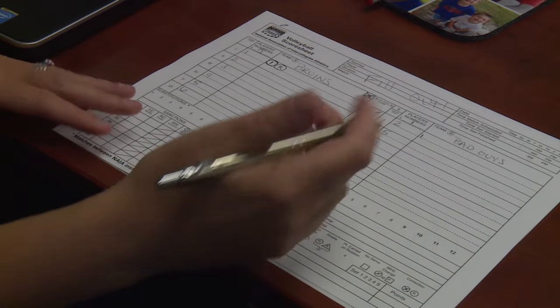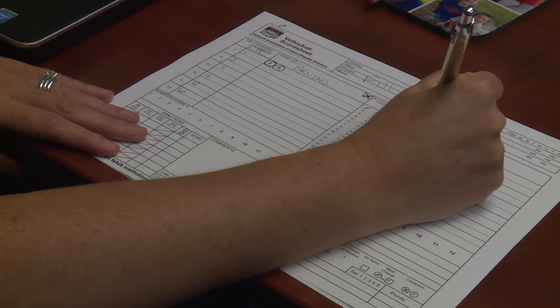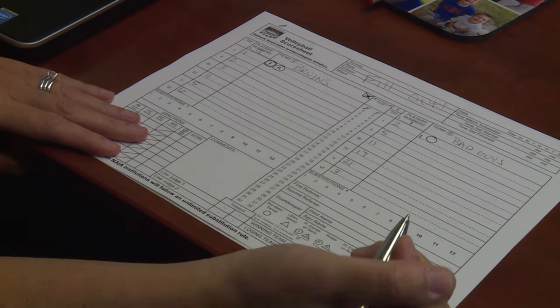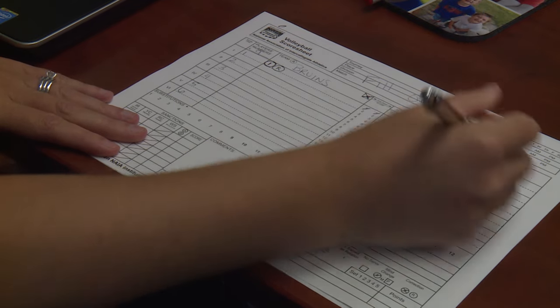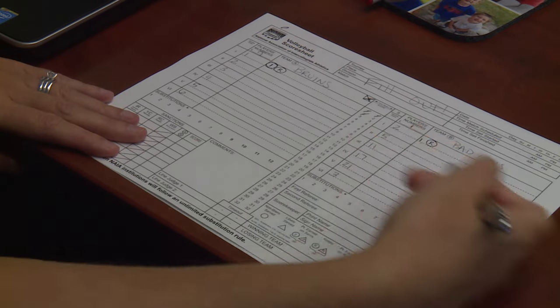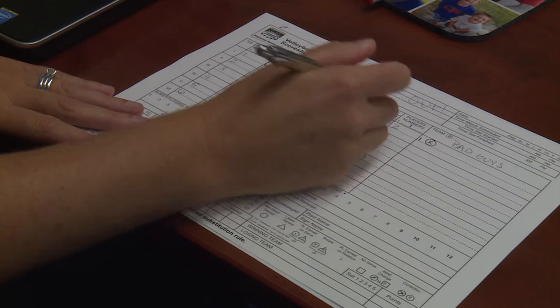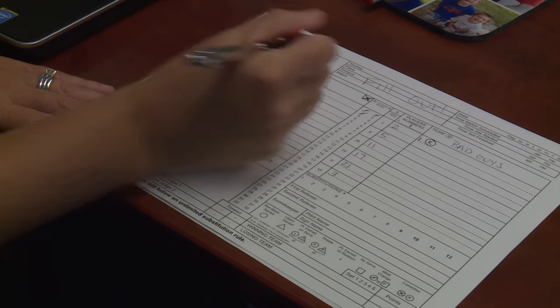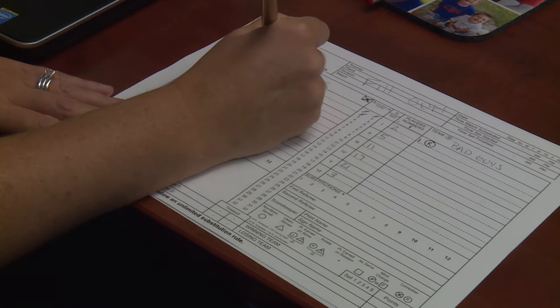Then any kind of exchange happens, whatever. The ref blows the whistle for the serve. You do a circle. Let's say it was a side out again, R, we're going to float back to this column. We're always going to go just kind of flow through the page here. So they got a second point. It's a second point for that next server.